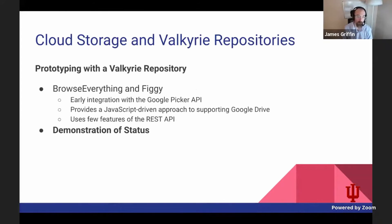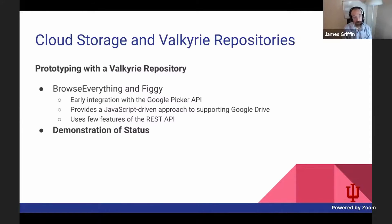A lot of the work undertaken really took place earlier this year between January and March to try to integrate the new Browse Everything 2.0 release with FIGGY. There was a heavy amount of early integration with the Google Picker API — a JavaScript-driven approach to supporting Google Drive uploads. Under these circumstances it became apparent that while the REST API was an excellent proof of concept, it wasn't particularly useful for the Google Drive use cases.